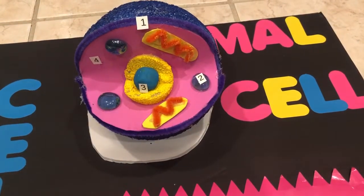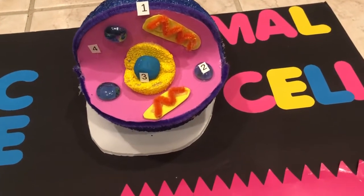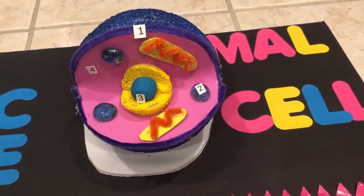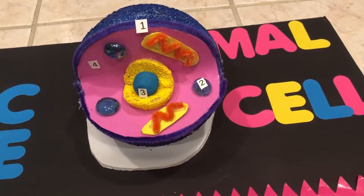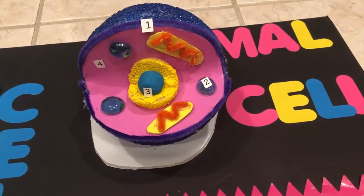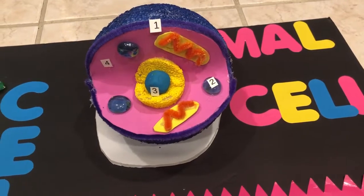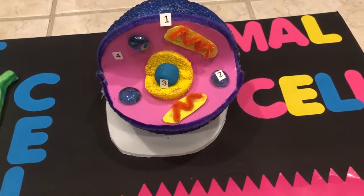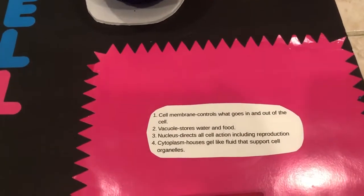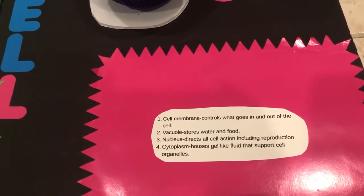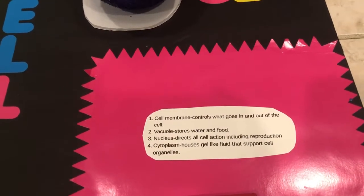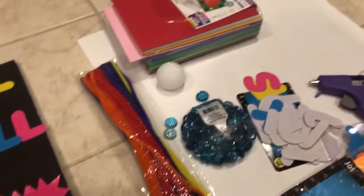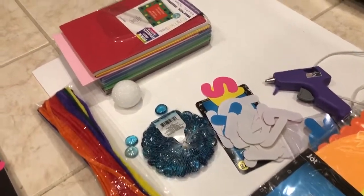For the vacuole we used blue rocks from Dollar Tree, and for the nucleus we did a two-inch styrofoam ball with play-doh in the middle. He was also asked to label the parts and their functions underneath, which he did.